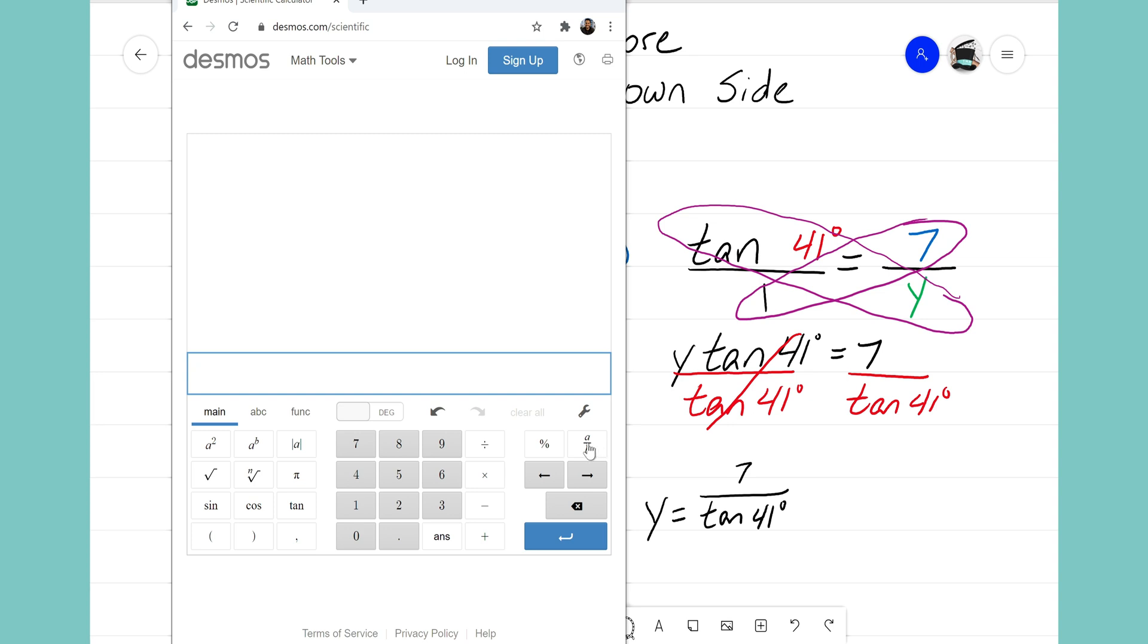And let's go ahead and enter that. I'm going to go ahead and click my fraction button here so that I can create my fraction of 7 over tangent of 41. I'll go ahead and type the 7 on top. On the bottom here I will type in tangent of 41 degrees. Here's my tangent button and inside I will type in 41 degrees.